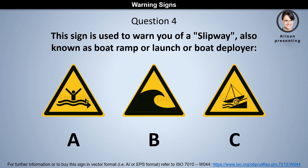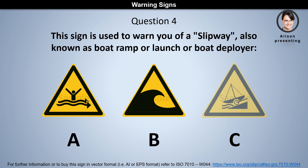Question 4. This sign is used to warn you of a slipway, also known as boat ramp or launcher boat deployer. Is it A, B, or C? The answer is C.